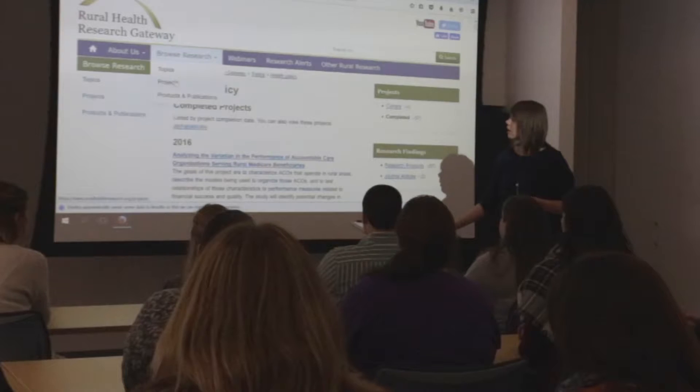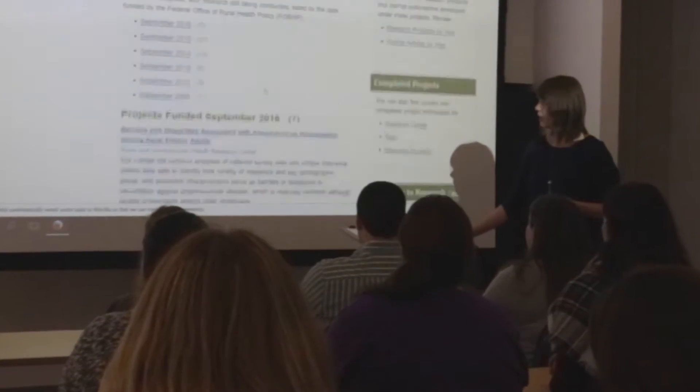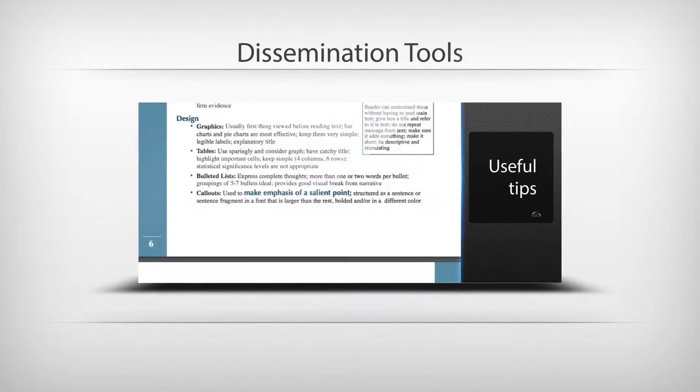We just want to make sure that people get to the information they want. You can get fact sheets, policy briefs, white papers from the research centers, journal articles. They have a dissemination toolkit, and I like that because it tells you exactly what a policy brief is and a fact sheet and how they differ. From a research and academic perspective, that's a good tool.